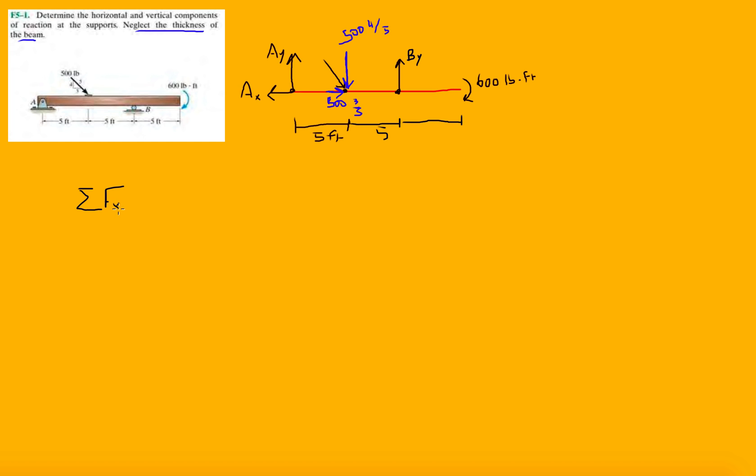ΣFx equals 0. Let's just do a coordinate axis here. So we have X positive that way, positive Y. And also we're going to have counterclockwise is positive, like always. So everything in the X direction: we have minus Ax plus 500 times 3 fifths. Is there any more forces in the X direction? Nope. And then right away, this tells us that Ax, the reaction in the X direction at A, is 300 pounds.